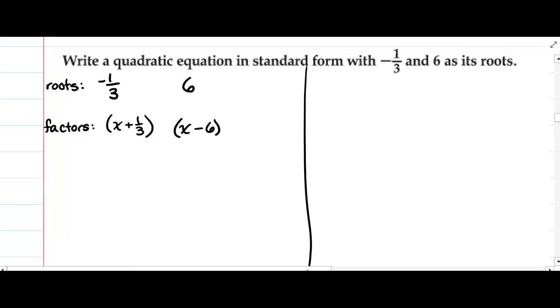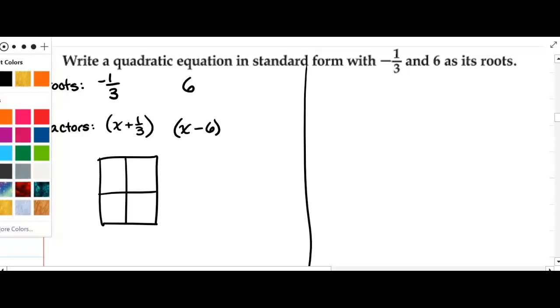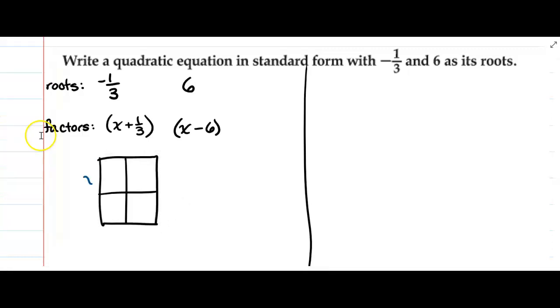At this point, all I need to do is FOIL or box my factors rather. So I have x + 1/3, x - 6. When I multiply these...